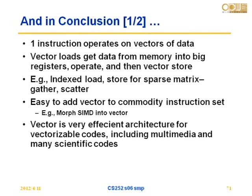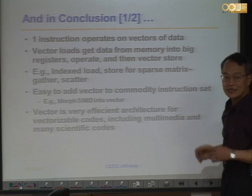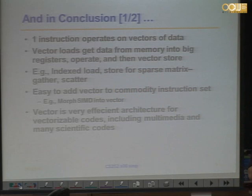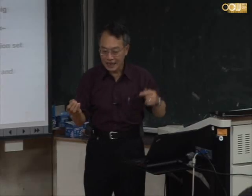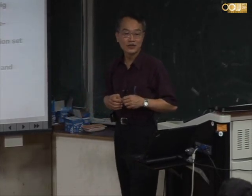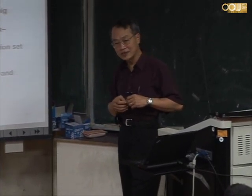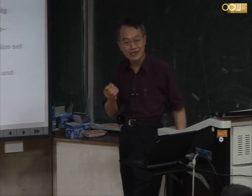Remember vector operations — one instruction operates on vectors of data, input and output. Vector loads get data from memory into big registers, operators operate, and then vector store. If the vector is very huge, there's no use for the cache — the cache would only sit in between, increasing overhead. So usually for vector computers, we don't use a vector data cache.